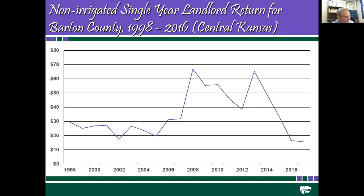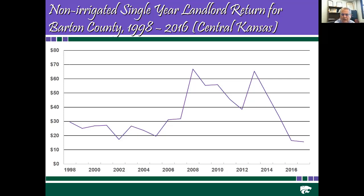For Barton County, this illustrates some of the stress in the production agriculture sector. The landlord net income from a property tax perspective in 2017 was the lowest in the time period — essentially ranging from $15.50 in 2017 up to about $65-$66. If you set property taxes on a one-year basis, you would see tremendous variability, capitalizing anywhere from a $15 to a $65 return, placing incredible volatility on the property tax situation.